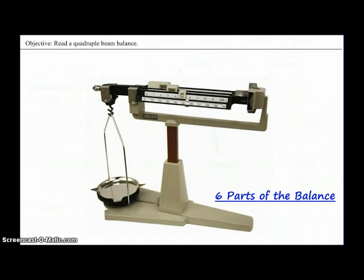There are six parts of the quadruple beam balance. The first part down here is called the pan. This is where you put the object that's being massed. On the left hand side of the arm is the adjustment screw. The adjustment screw is used to zero out the balance before you start to mass an object.